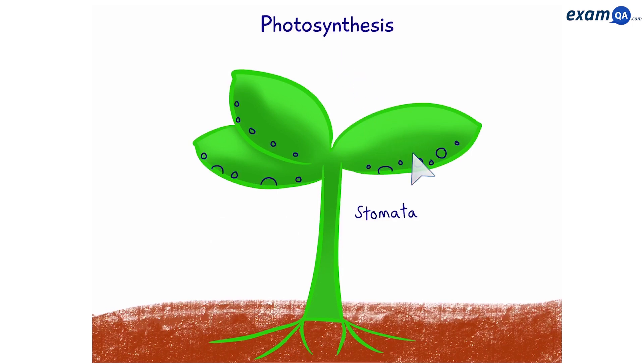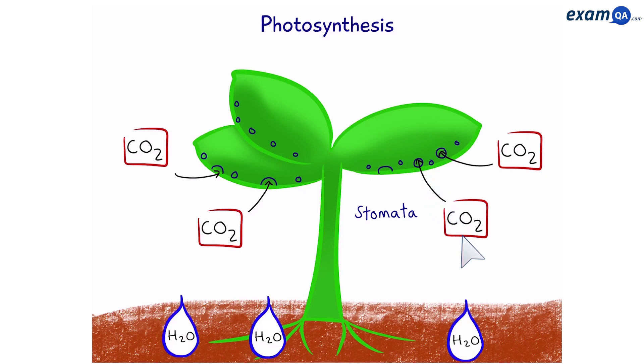Plants have holes in the bottom side of their leaves, called stomata. This is where they take in gases such as carbon dioxide. Also, they take in water from their roots. These two, in combination with a green pigment called chlorophyll, and with the help of sunlight, combine together to make food for the plant.